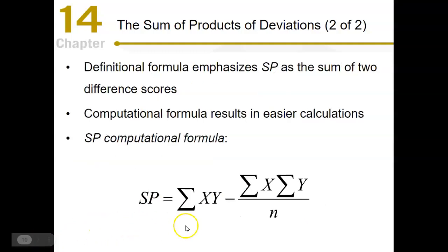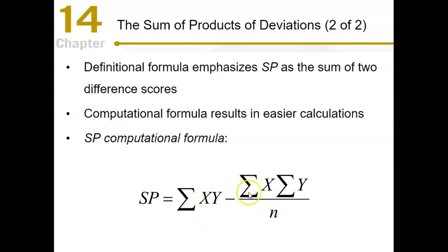There's also a computational formula for the sum of products, which looks very similar to the sum of squares formula. It's the sum of X times Y, minus a fraction where the numerator is the sum of X times the sum of Y, divided by N.